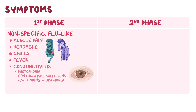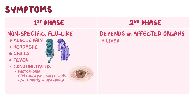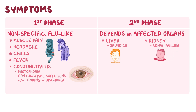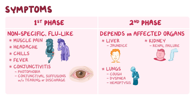In the second phase, signs and symptoms depend on the affected organ. With liver damage, there may be jaundice. With kidney damage, there may be signs of renal failure, like reduced urine output and fluid retention, which leads to a puffy face and swollen legs, ankles, and feet. When the lungs are affected, symptoms include a cough, dyspnea, which is difficulty breathing, as well as hemoptysis, or blood in the sputum. Finally, with meningitis, there may be headaches, fever, and a stiff neck.